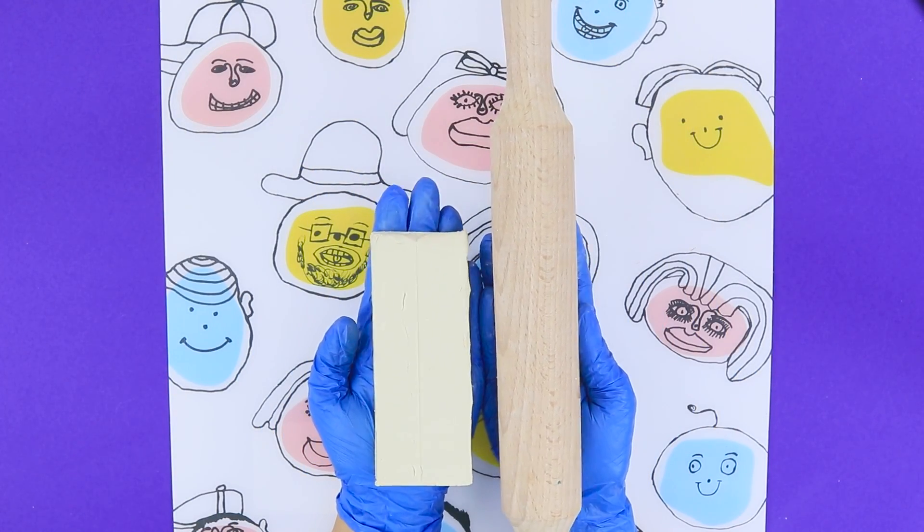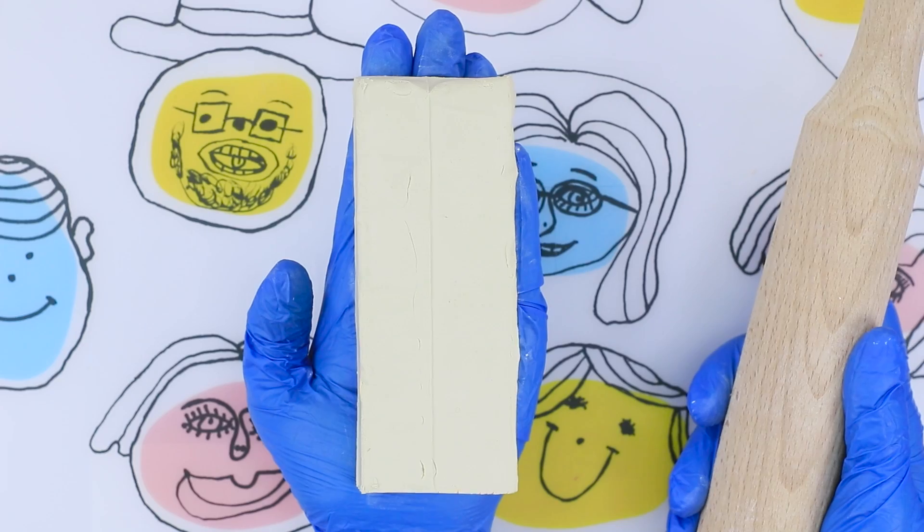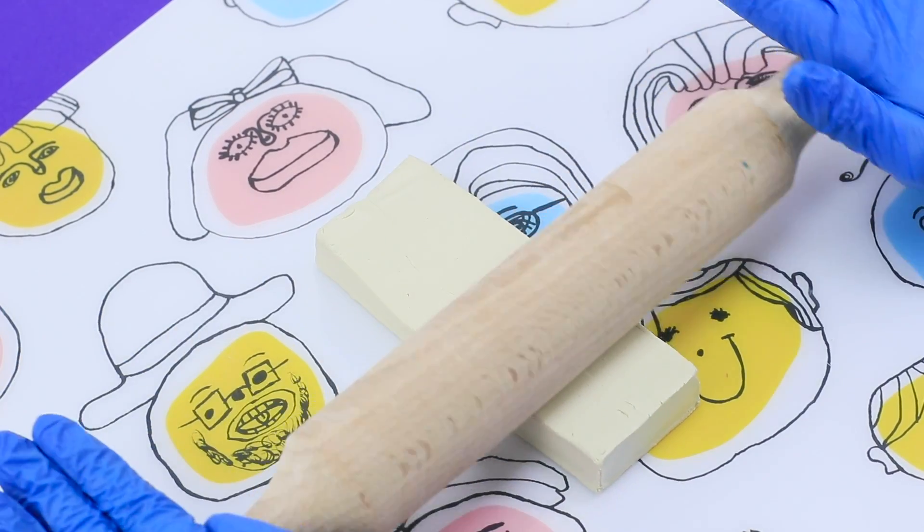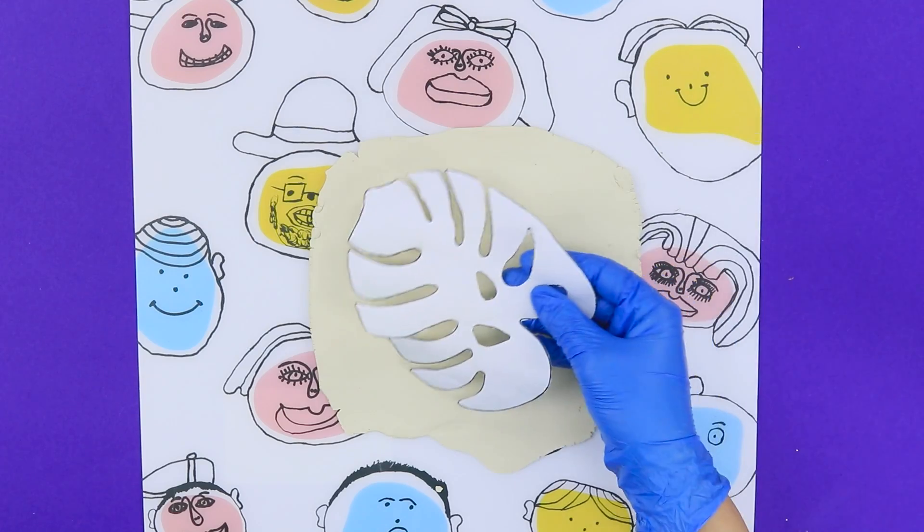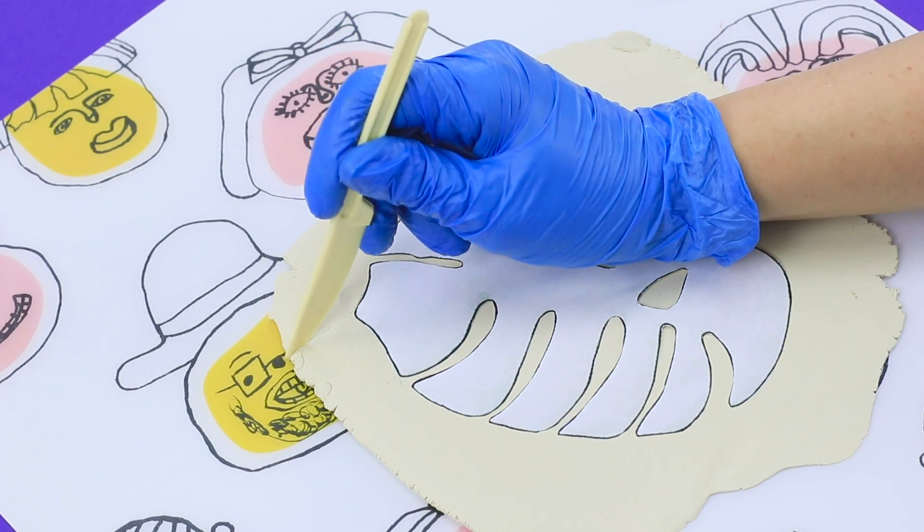For the first idea, you are going to need a rolling pin and sculpture clay. Roll out a piece of clay. Put a Monstera leaf made out of paper on top. Cut it along the stencil.